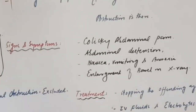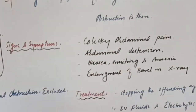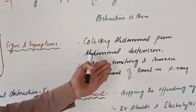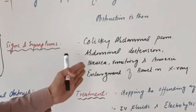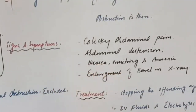The signs and symptoms of Ogilvie syndrome are those of obstruction. There will be abdominal pain and abdominal distension as the most common signs. There will also be nausea and vomiting because the contents are not passing through the bowel and can reflux back.